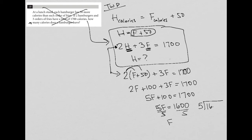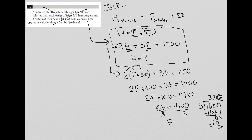I want to show you — there's nothing wrong with just writing this on the side. So 5 goes into 16 three times. 5 times 3 is 15. 16 minus 15 is 1. Bring down the 0, you have 10. 5 goes into 10 twice. 2 times 5 is 10. Bring down the 0, you have another 0. 5 goes into 0 zero times, so there's no remainder. So F is equal to 320.